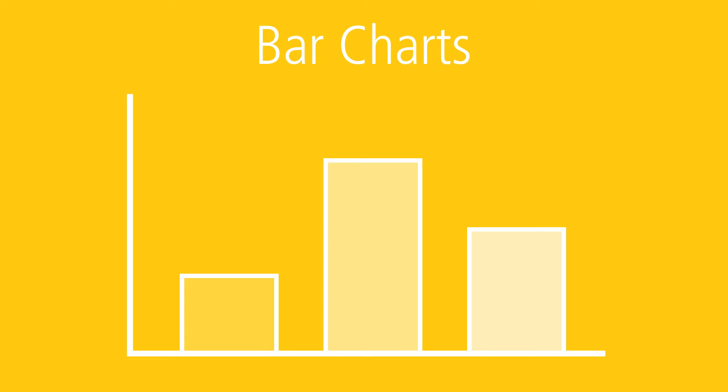Bar charts represent quantities or percentages by length of horizontal or vertical bars. As with line charts, bar charts often illustrate increases or decreases in magnitude of a certain variable or the relationship between similar variables. Bar charts may or may not be based on the movement of time. Bar charts are divided into three categories: standard, comparative, and component.